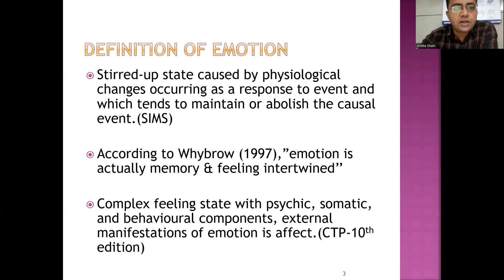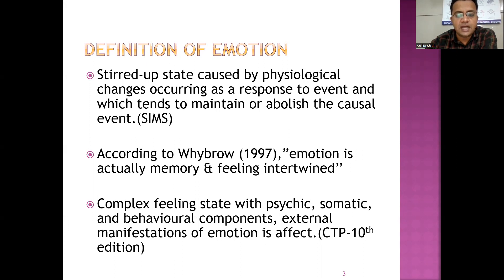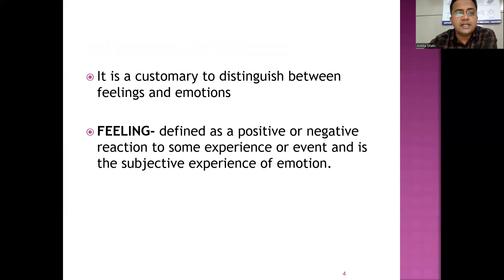Coming to the definition of emotion: it is a straight-up state caused by physiological changes occurring as a response to an event, which tend to maintain or abolish the causal event. According to Vibro, emotion is actually memory and feeling intertwined — a complex feeling state with psychic, somatic and behavioral components. The external manifestations of emotions is affect. This definition is from CTP 10th edition. It is customary to distinguish between feelings and emotions. Feeling is defined as a positive or negative reaction to some experience or event and is the subjective experience of emotion.